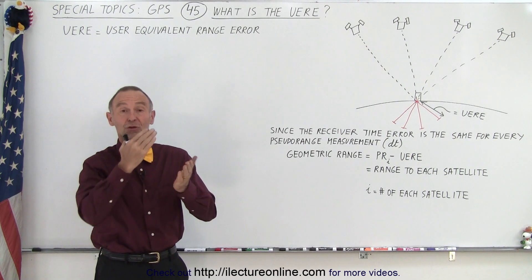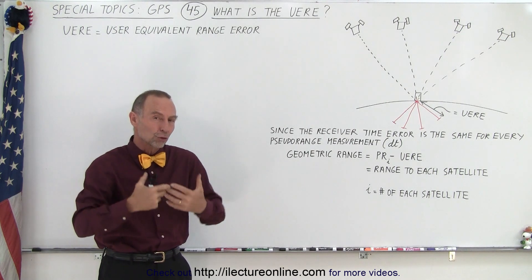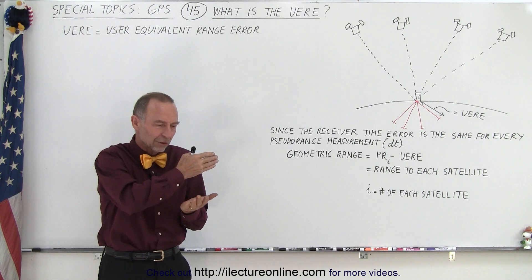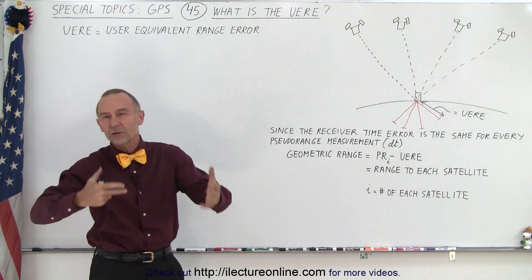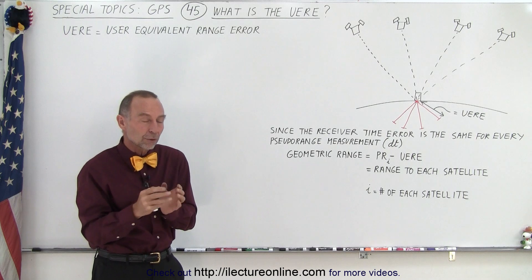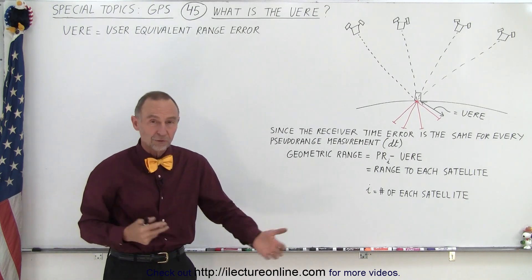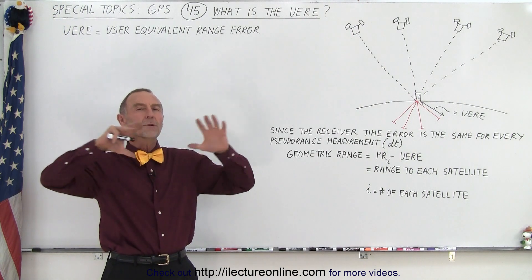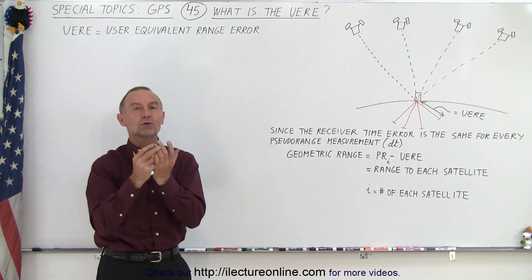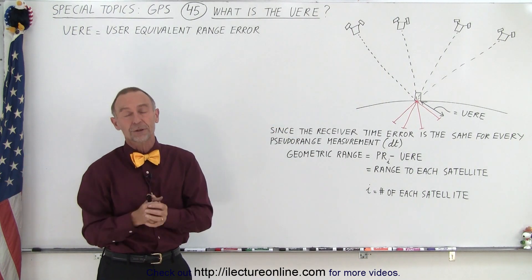Well, remember that we have pseudo ranges, and then we want to find a true geometric range, and then we have to subtract or add a whole bunch of changes, or numbers, based on all kinds of biases in the theory of relativity, in the ionosphere, in the troposphere, and so forth. Well, they're all combined into something called the UERE to make things easier.